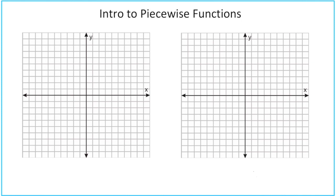Now let's look at the line y equals 4 — a horizontal line where all y values are 4. Horizontal lines are common in piecewise functions. However, you won't see a vertical line in a piecewise function, because each input must have only one output. A vertical line would have the same x value for multiple points, violating that rule.